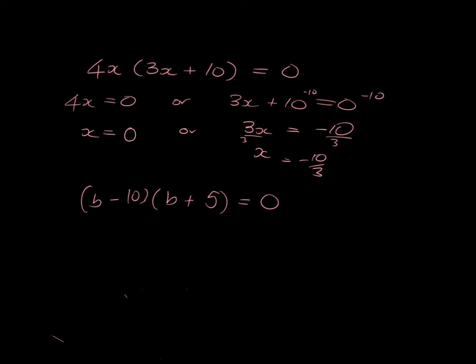Try this one for yourself. If these two things multiply together to give you zero, what does b have to be? Pause the video and try. Okay, did you do this? You say, look, you know that because they multiply together to give you zero, you know that that's zero or that's zero. And then you know, let's put in the or. So then you know b is 10 or you know b is minus 5. Nice and simple.